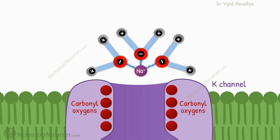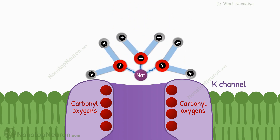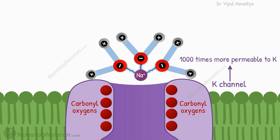Now what if a sodium ion comes nearby? The sodium ion is smaller in size, so relative to its distance from the oxygen of water, its distance from the carbonyl oxygen of the channel is very long. The sodium ion cannot interact with the carbonyl oxygen, and therefore it cannot get rid of the water molecules bound to it. Such an ion with water molecules bound to it cannot fit into the channel and therefore cannot cross it. Because of these properties of the potassium channel, the potassium channel is 1000 times more permeable to potassium than sodium, even though sodium is a smaller ion.